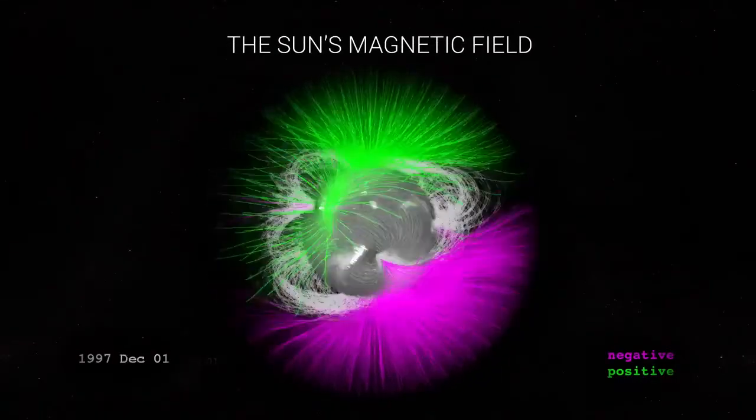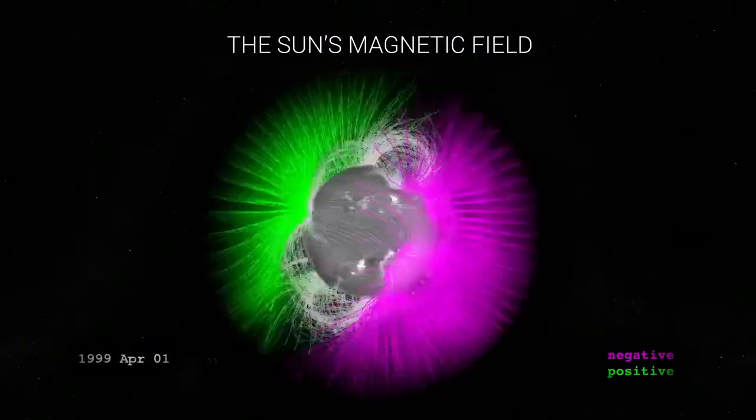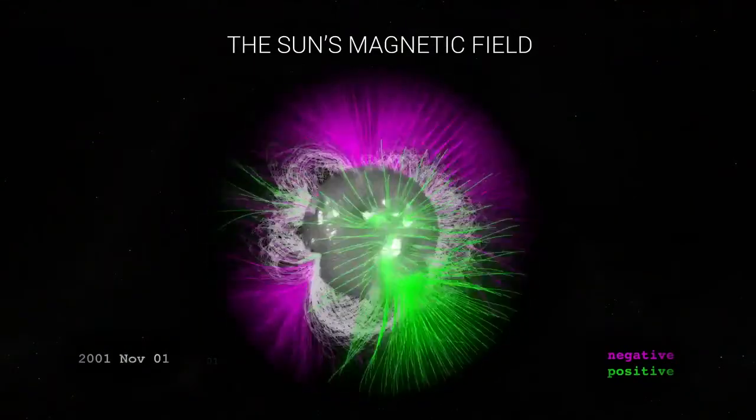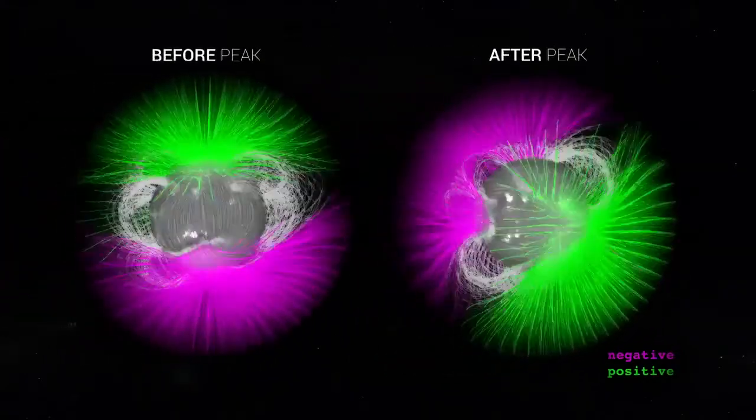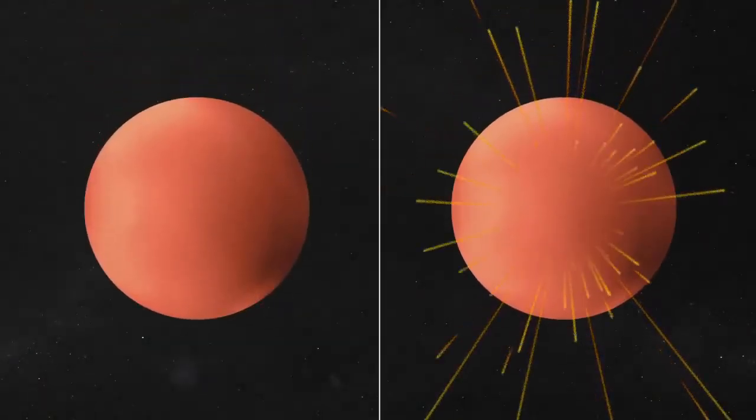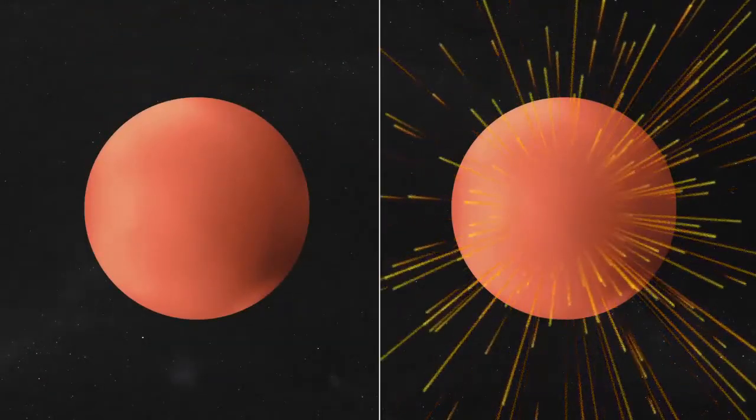Roughly every 11 years, the sun's magnetic field ramps up. This is known as the solar cycle, and at the peak, the sun's magnetic poles flip. North becomes south, and vice versa. This cycle causes the sun's activity to sway from calm to turbulent with an abundance of flares and eruptions, which in turn affects the solar wind.